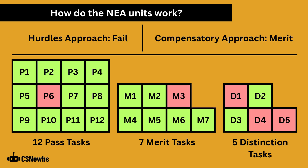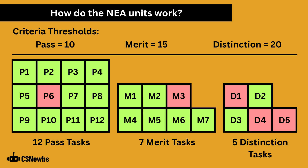To explain how these units work, consider a student who met criteria for 11 pass tasks, 6 merit tasks, and 2 distinction tasks — 18 tasks in total. In the old hurdles approach, they would have failed because you needed all pass tasks for a pass, all pass and merit for a merit, and all tasks for a distinction. The new compensatory system treats each task as a single point: 10 tasks fully met earns a pass, 15 earns a merit, and 20 out of 24 earns a distinction. So what would have been a fail is now fairly awarded a merit.